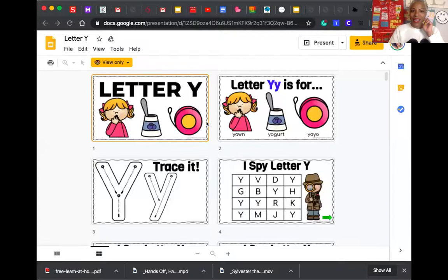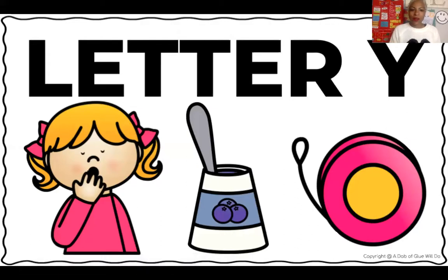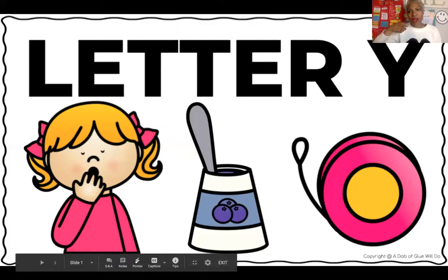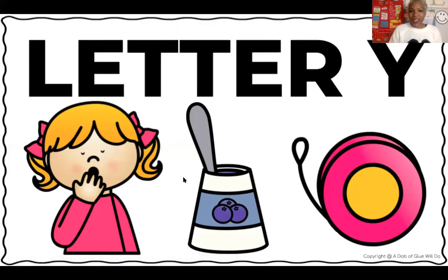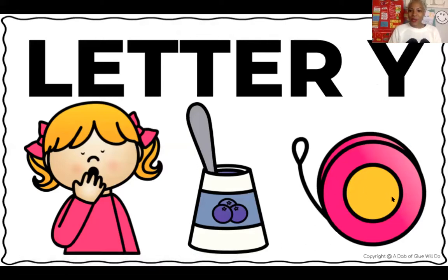I'm going to show you a few words that start with the letter Y. We're going to play a game and I want to hear you. So the letter Y — what is she doing? What's our friend doing here? Oh, she's yawning. Yuh, yuh. What's this picture here? Something that we eat for breakfast or maybe for a snack. Yogurt. And what is that? It's a toy that we sometimes play with. A yo-yo.